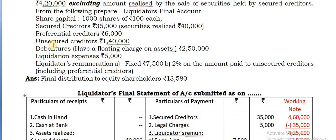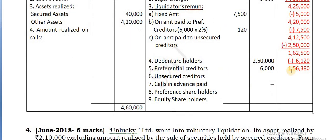Now you see about the unsecured creditors - this problem compared to previous two problems is in a different zone. Unsecured creditors' payment claim is 1,40,000. But what is the cash available? 1,56,000. So more amount is there.